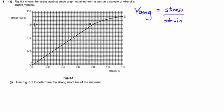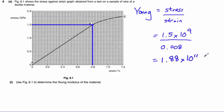So we can calculate this gradient by drawing a line across to the y-axis and down to the x-axis. This gives us a stress of 1.5 times 10 to the power of 9, because we're measuring in gigapascals here, divided by 0.8%, which is the same as saying 0.008, which gives us a Young modulus of 1.88 times 10 to the power of 11 pascals.